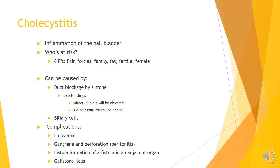Typically, cholecystitis can be caused by a duct blockage by a stone, meaning direct bilirubin at this point is going to be elevated, while indirect bilirubin — before it actually gets conjugated — will be at a normal level.